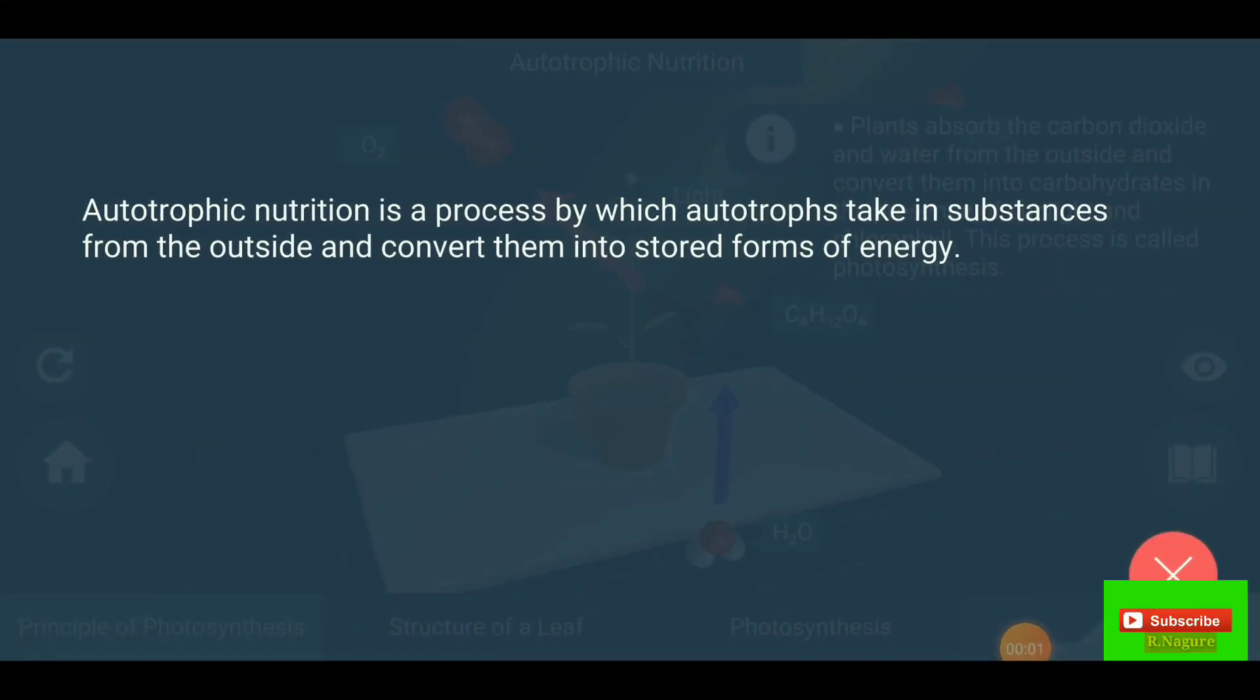Autotrophic nutrition is a process by which autotrophs take in substances from the outside and convert them into stored forms of energy.